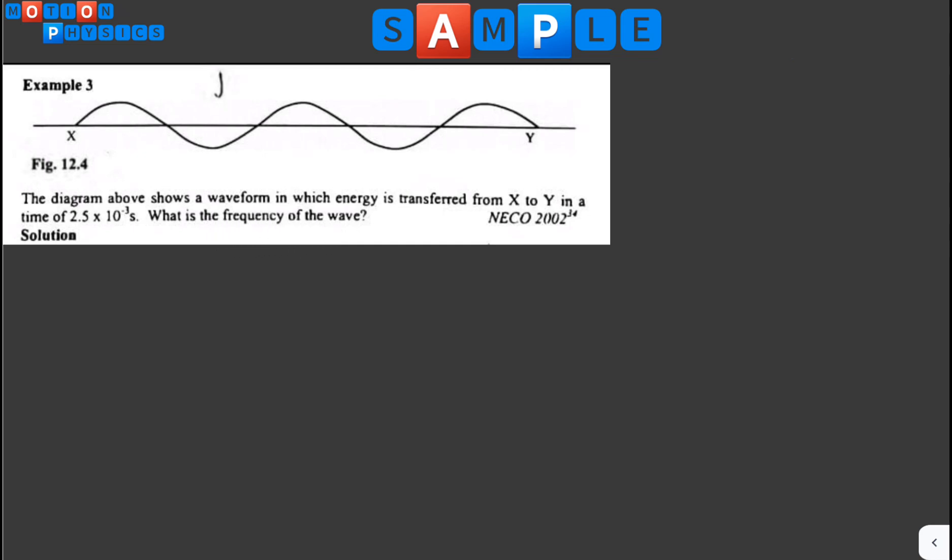First things first, we need to write our data out. The given data: time equals 2.5 times 10 raised to the power of minus 3 seconds, and you are asked to calculate the frequency.